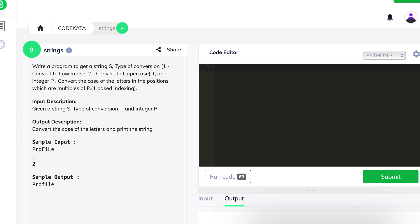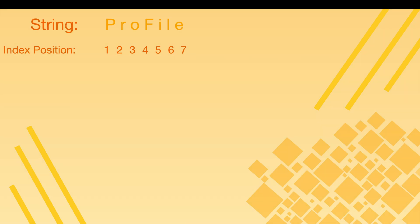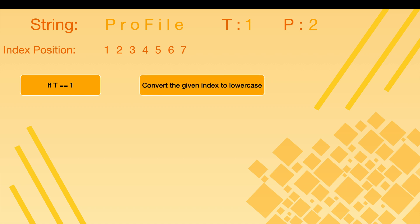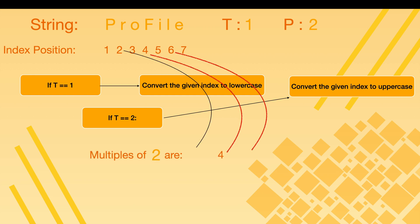In this question, we are provided with a string followed by two integer values. The string consists of both uppercase and lowercase letters in various positions, and what we have to do is convert each letter of the string at positions that are multiples of the second integer value to lowercase or uppercase, depending upon the value present in the last line.